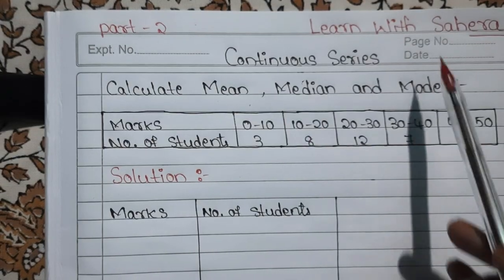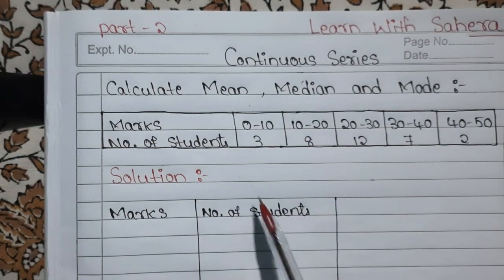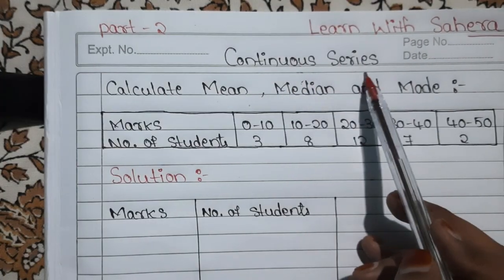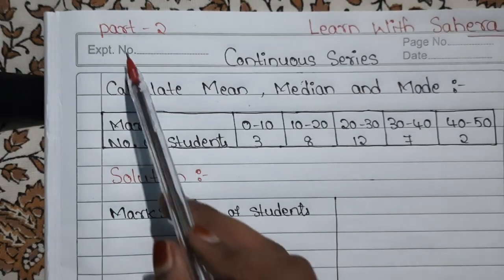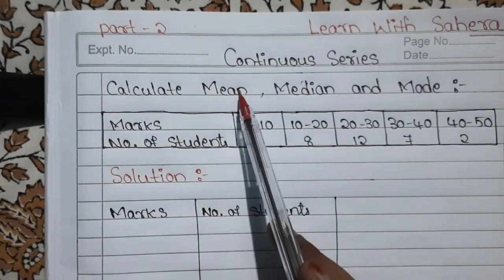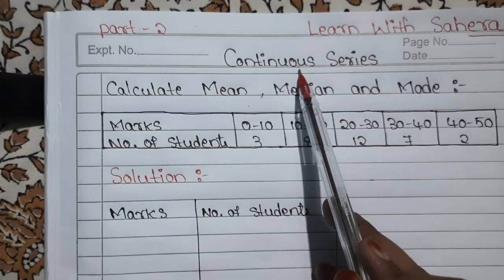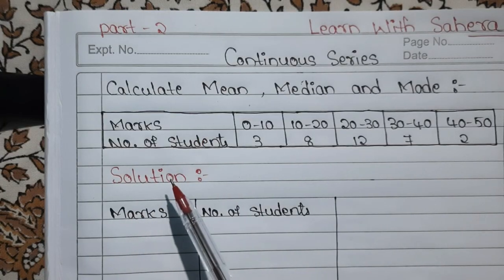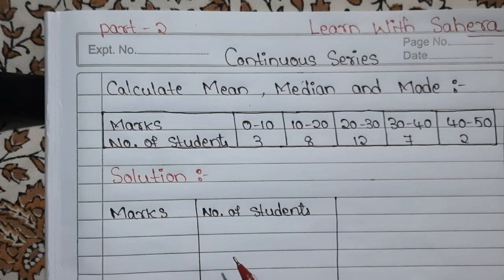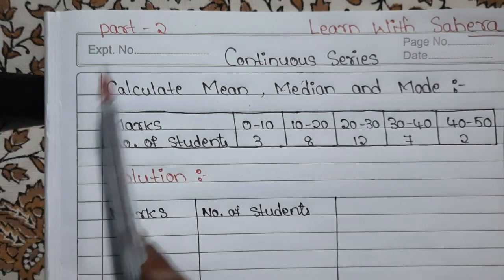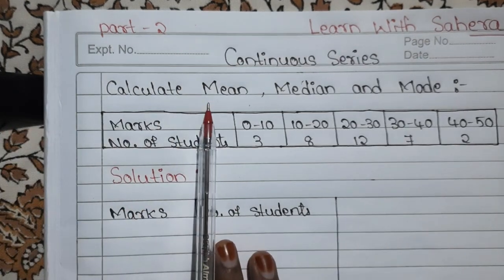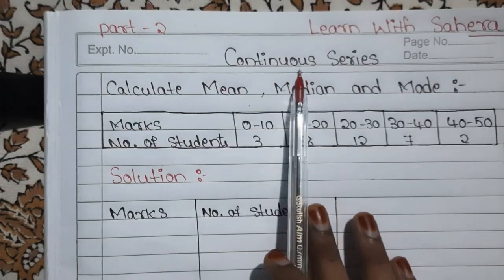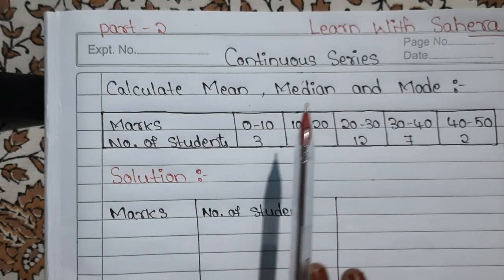Hello everyone, welcome back to the channel Learn With Sahira. In this video we are going to see the calculation of mean, median and mode in continuous series. Continuous series is also known as grouped data. In our previous video — Part 1 — we have seen the calculation of mean, median and mode in discrete series, also known as ungrouped data. If you didn't watch that video, please go to my channel and watch it. If you watch both parts you will be perfect with the concept of mean, median and mode in both series.